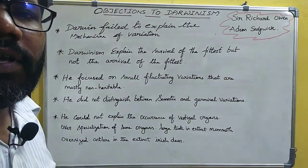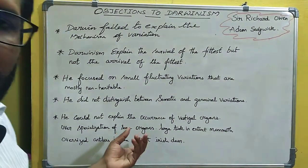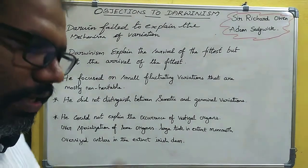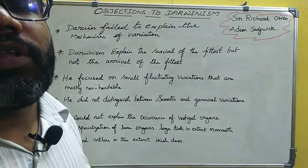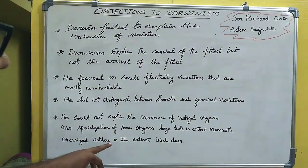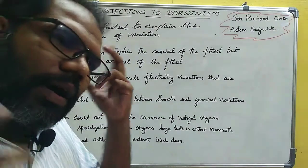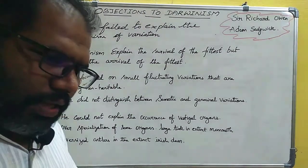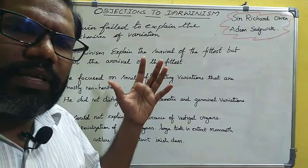Another objection is overspecialization of some organs. For example, the large tusks of the extinct mammoth became overspecialized and contributed to its extinction. Similarly, the oversized antlers of the Irish deer had different branches; when the antlers grew too large and complex, they became a disadvantage, making survival difficult.